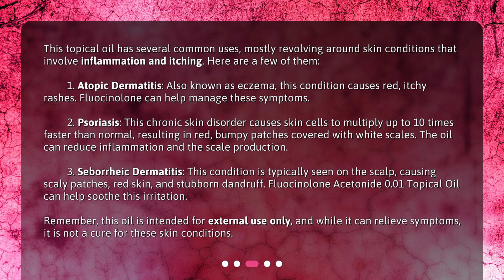2. Psoriasis — this chronic skin disorder causes skin cells to multiply up to 10 times faster than normal, resulting in red, bumpy patches covered with white scales. The oil can reduce inflammation and the scale production.